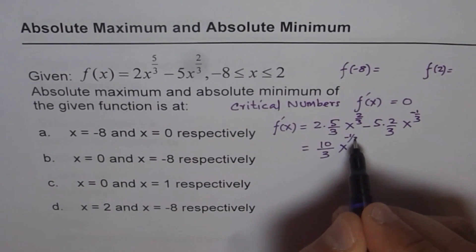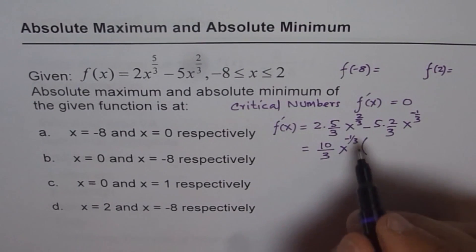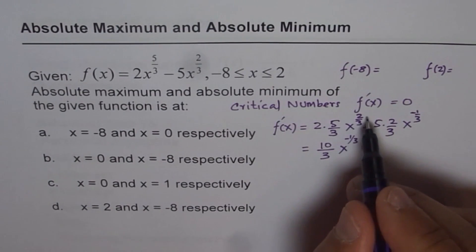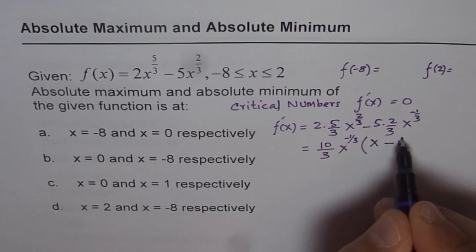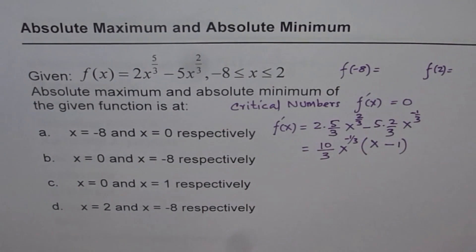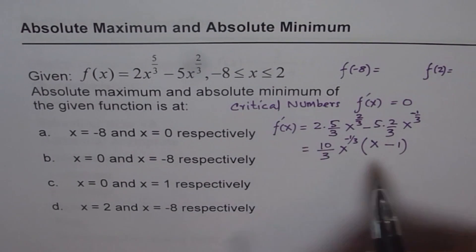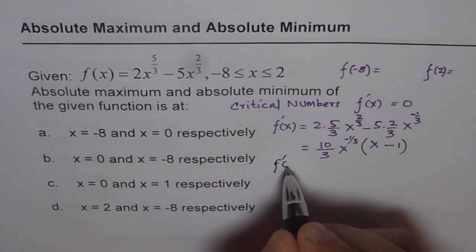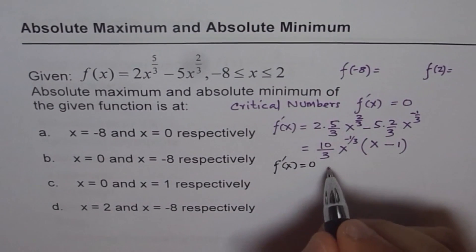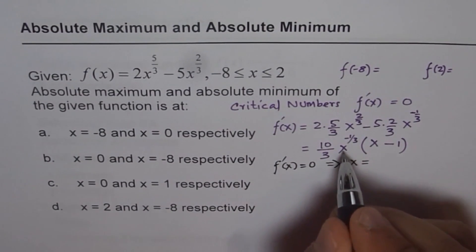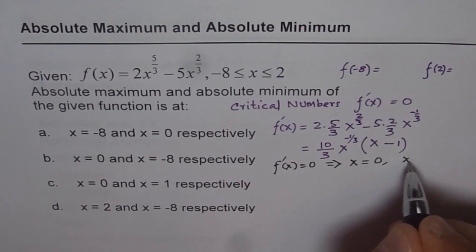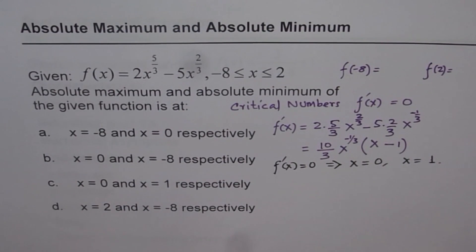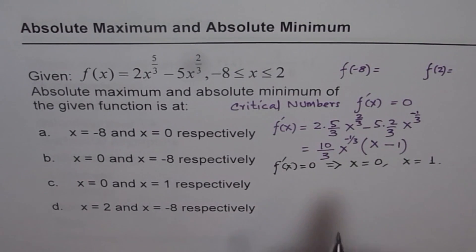We factor out (10/3)x^(minus 1/3), and what remains is x minus 1. Setting f'(x) = 0 gives us critical numbers x = 0 and x = 1. So we need to find the function values at these two critical numbers.